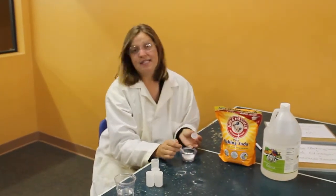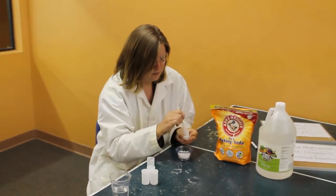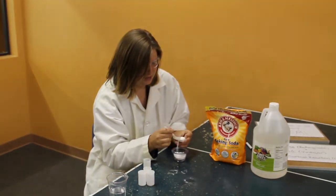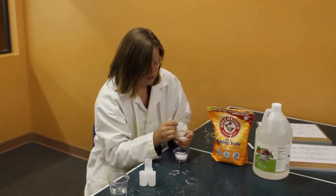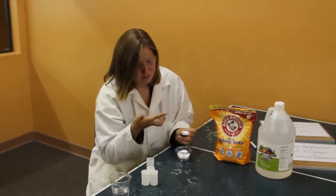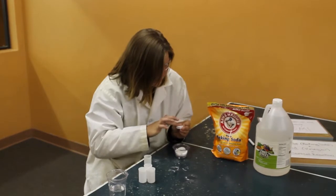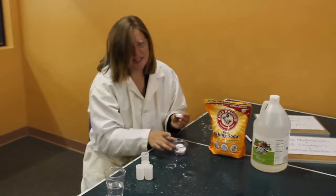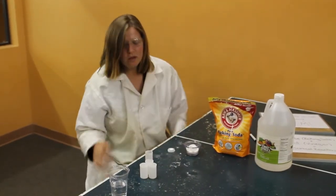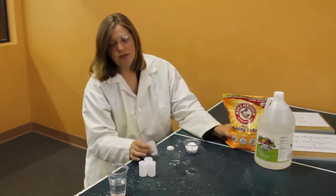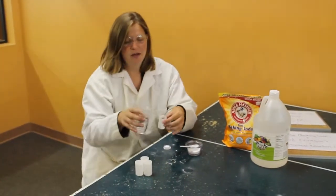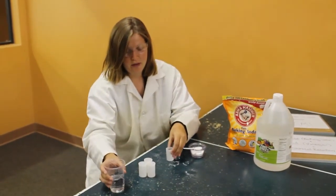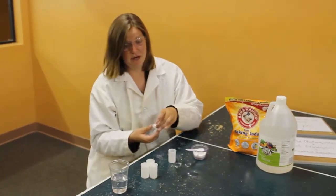So we have to make sure we do the same exact thing with the baking soda. Put it in the well. Scrape off all that extra. Spit on our finger of course. Pat it down in there so that we have about the same amount inside. So this time we're going to use a little bit less vinegar. Only about a quarter.